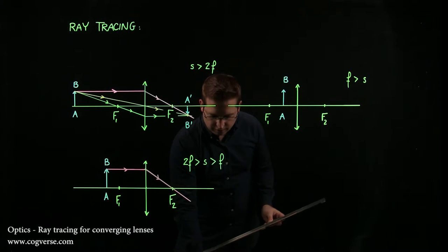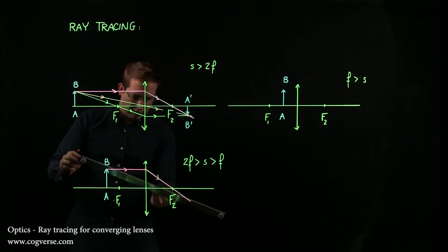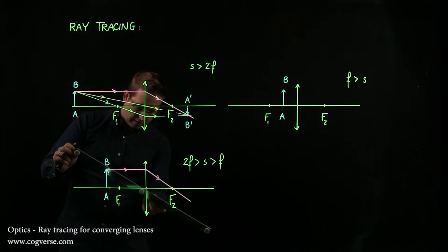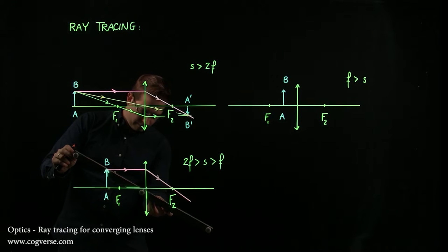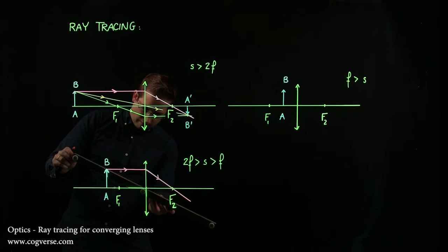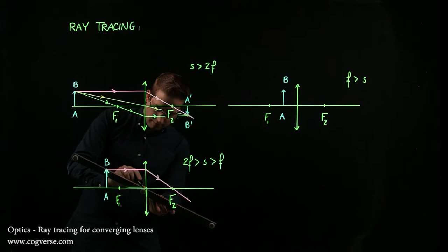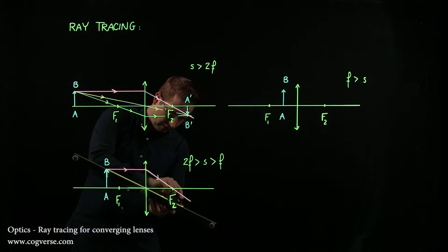Then the second rule tells you that light that goes through the center of the lens is not deflected. So let's try to do this carefully here. The light going through the center of the lens, and that light is not deflected.